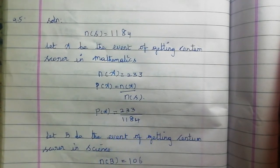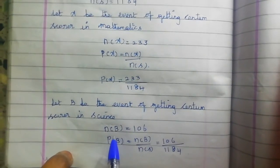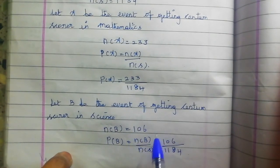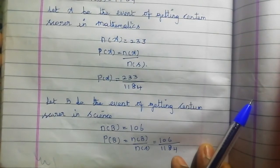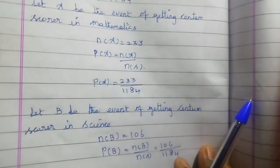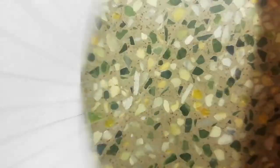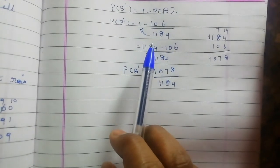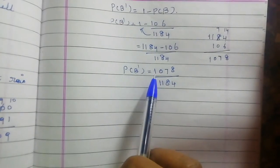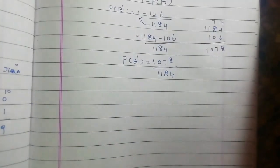For the science centum probability, n(B) is equal to 106. The probability we need is P(B dash). The formula for P(B dash) is 1 minus P(B), so we apply the value of B to get the answer. We get 1078 by 1184 as the final answer for this question. Thank you for watching.